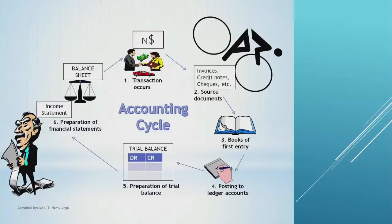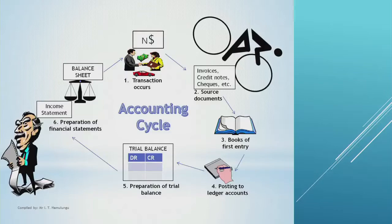In the accounting cycle: number one, a transaction occurs. Number two, a source document is created — receipts, credit notes, checks, invoices. Number three, it is recorded in the book of first entry. After the books of first entry, we post this information to the ledger accounts, then balance off the ledger accounts, and then do a trial balance to see if there were errors made through the process.